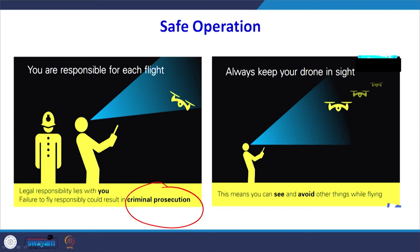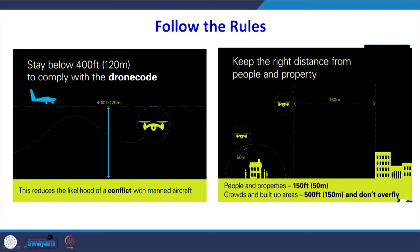Legally, if your drone damages somebody's property, infrastructure, or injures a human being, that is your responsibility. You are totally responsible for each flight you undertake, and there is no excuse that you are a beginner. Rules and limitations must be understood. The altitude limit is 120 meters; keep a distance of approximately 50 meters from people and their property. In a crowded or built-up area, 150 meters is the limit, and you must not overfly over people.